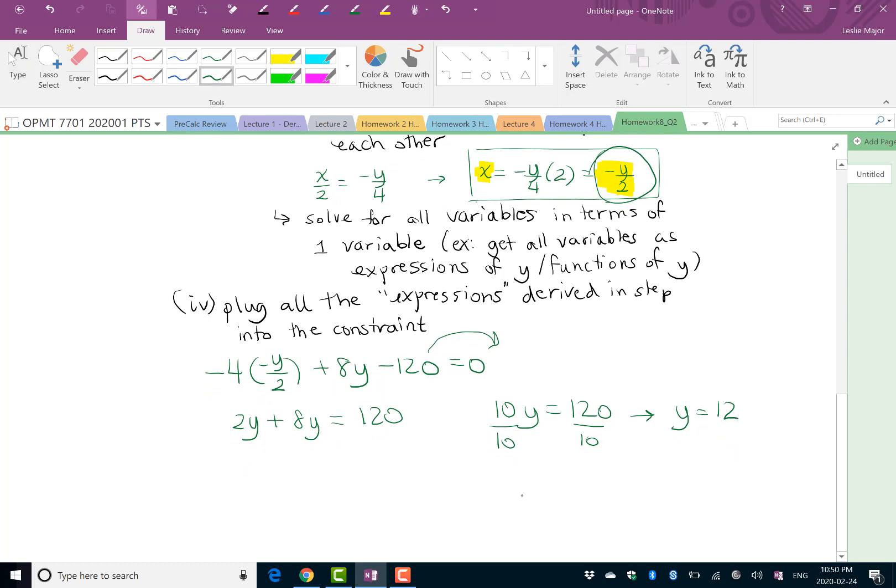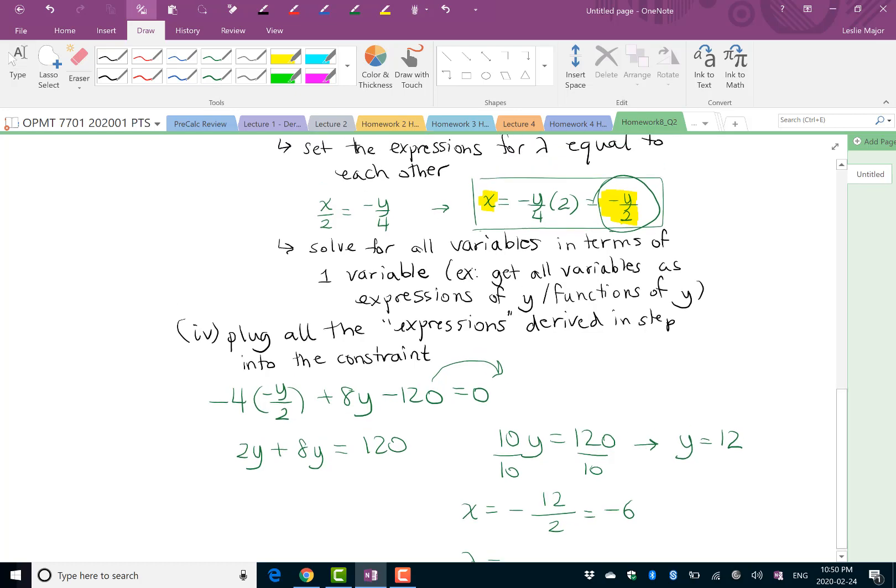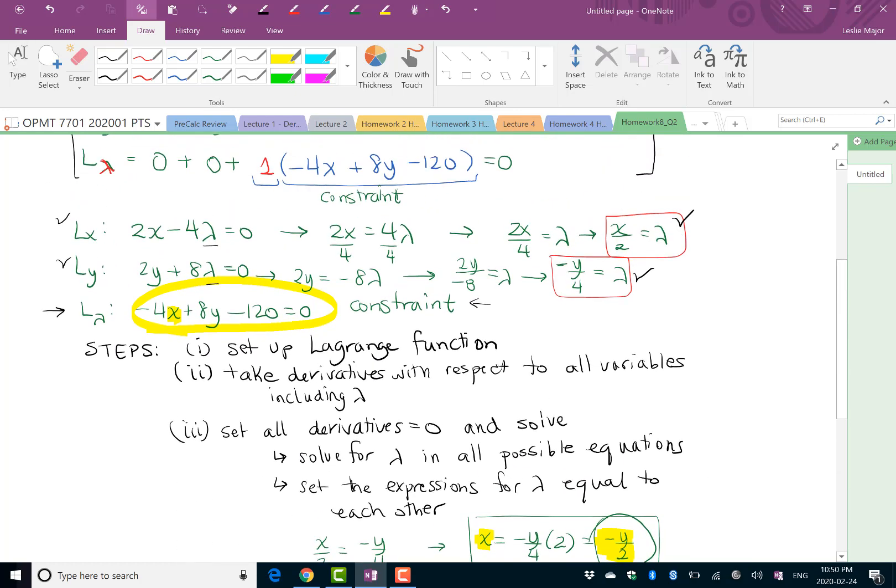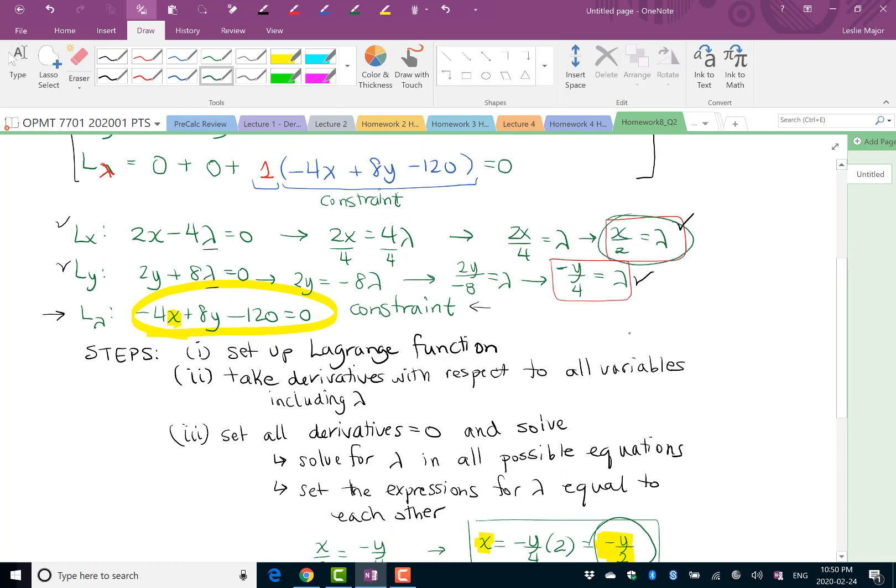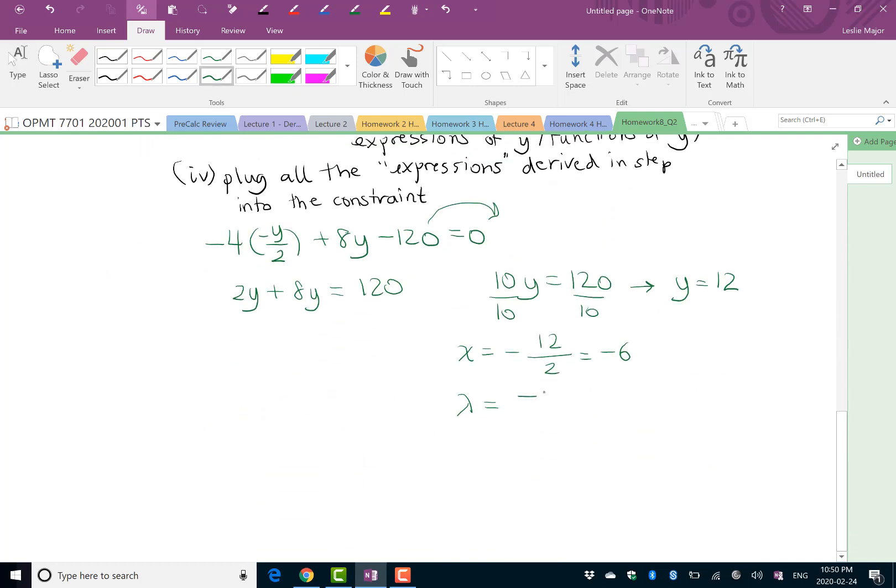We have now solved for y, and we have x as an expression of y. x is negative y over 2, so it's negative 12 over 2, which becomes negative 6. We also know lambda as a function of x and y. Lambda was x over 2, so lambda is negative 6 over 2, which is negative 3. That is how we do the Lagrange multiplier method. Our solution is that we have a maximum for f(x,y) at x equals negative 6 and y equals positive 12.